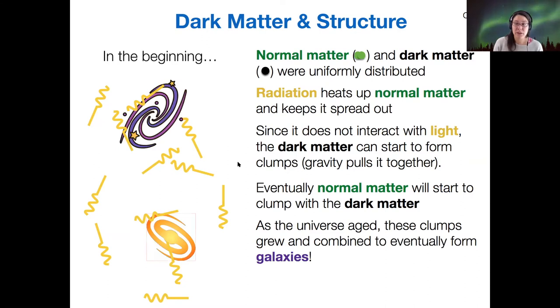So eventually these continue to coalesce and become galaxies. So dark matter plays a huge role in causing that normal matter to clump together. And if the dark matter was unable to clump together because of interaction with radiation,